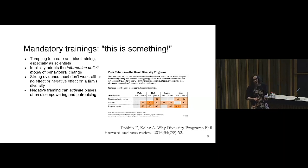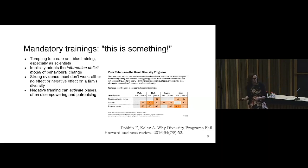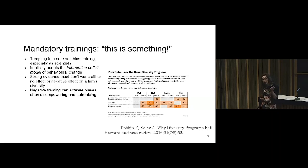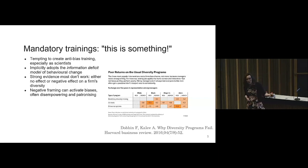Mandatory equity and diversity trainings are a very common tool that people reach for first. A large corporation has leaks indicating a problem with racism or sexism, so they set up mandatory training. Unfortunately, if you do it badly — and it turns out a lot of trainings are quite bad — it can leave your organization with fewer women and people of color in management positions than if you had done nothing at all. That's the opposite of what we want.